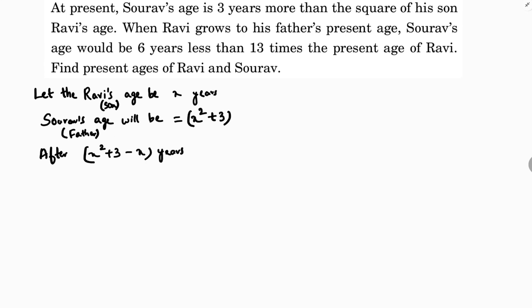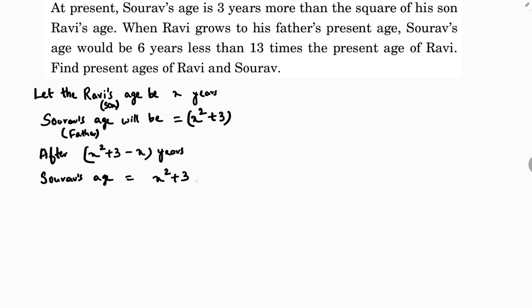After X squared plus 3 minus X years — because suppose this is 10 and this is 40, when Ravi grows to his father's age it means 30 years later. We get 30 by subtracting 40 minus 10. So if we subtract X squared plus 3 minus X, after these many years Saurav's age will be X squared plus 3 (present age) plus X squared plus 3 minus X, which gives father's age as 2X squared minus X plus 6.